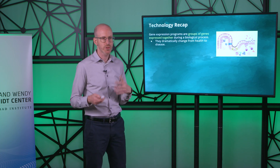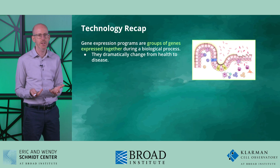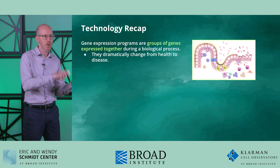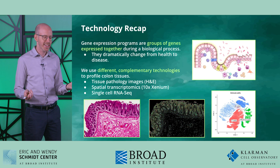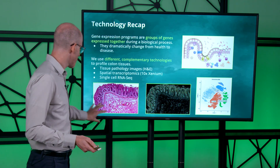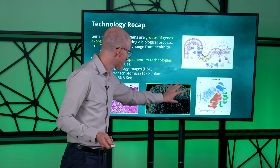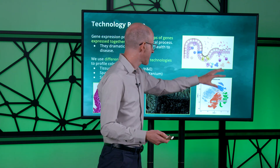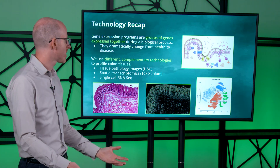Let's recap what we've covered in these three sections of Lecture 2. First, gene expression programs are groups of genes expressed together during a biological process, and they can dramatically change as we go from health to disease — for example, comparing normal colon to ulcerative colitis or normal colon to colorectal cancer. Second, there are many technologies to profile and measure human tissues: we've introduced what pathologists do with H&E staining, the Xenium spatial transcriptomic experiment measuring 500 genes and their locations in tissue, and single-cell RNA sequencing which measures expression of 20,000 genes per cell, but loses spatial information.